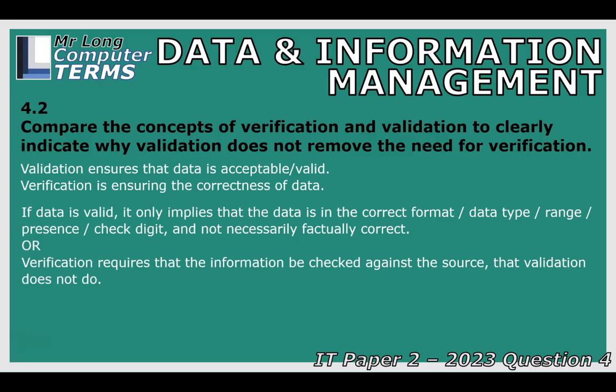For example, a test mark of 84 out of 100 is a valid mark, but verification is needed to confirm it's accurate — it might have been mistyped and should actually be 48. Verification can be done by having people re-enter data, comparing it with data from other systems, or getting people to confirm the information. So validation ensures the correct type, while verification ensures accuracy.